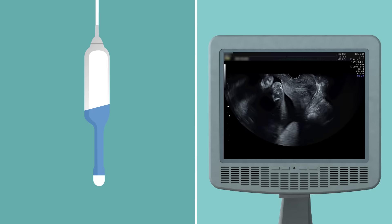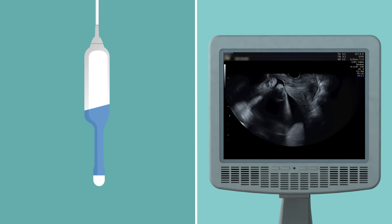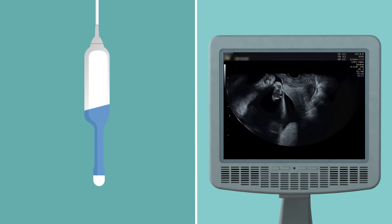The footprint from the transvaginal probe is also fan-shaped but typically has a wider sector angle than the transabdominal curvilinear probe.